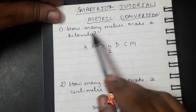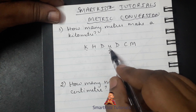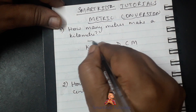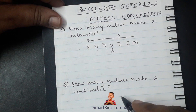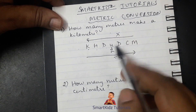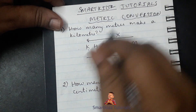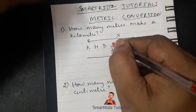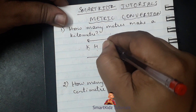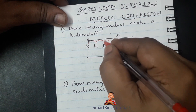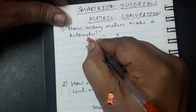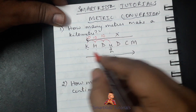We are asked how many meters make a kilometer, which means we need to go towards our left. Whenever we travel to the left, we need to multiply. Whenever we travel to the right, we need to divide. In this case we have to multiply. We are at meters right now, and we need to go from meters to kilometers — that is one, two, and three jumps. Every time we jump towards our left, we multiply by 10.